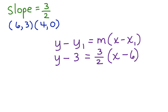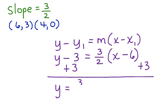Now we're going to solve for y. The first thing we'll do is add 3 to both sides of this equation. Now I've got y equals 3/2 times (x minus 6) plus 3.